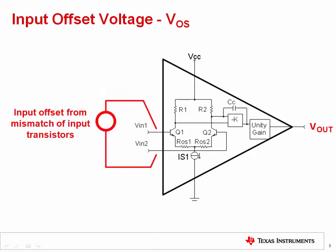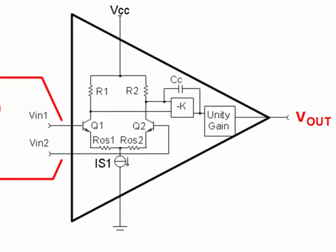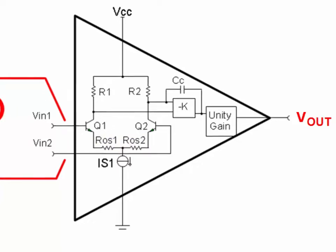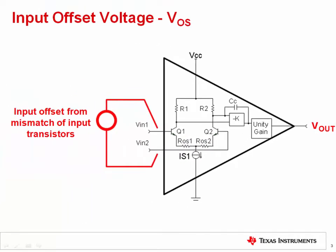Looking at the inside of an op amp, we can see that the mismatch of transistors Q1 and Q2 in the differential input pair is what causes the offset voltage. In some cases, internal resistors ROS1 and ROS2 are laser trimmed in order to compensate for this mismatch and obtain very low offset voltage. In other cases, an internal digital correction circuit is used to minimize offset voltage and offset drift.